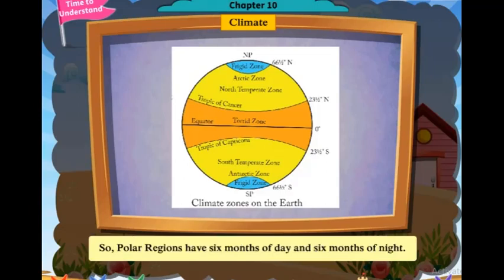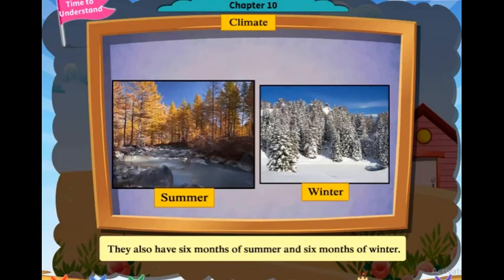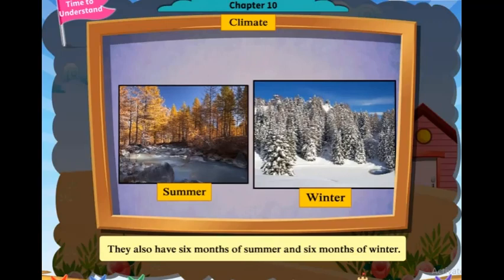Polar regions have six months of day and six months of night. They also have six months of summer and six months of winter.